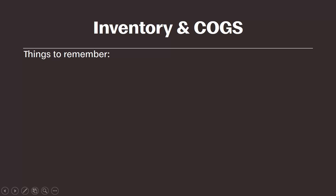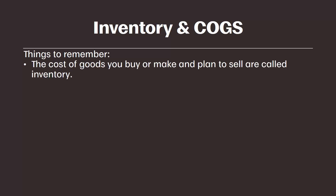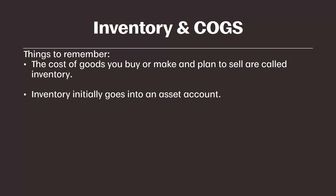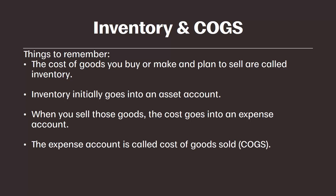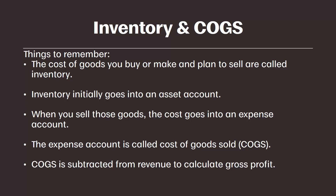Let me recap what I need you to know for now. First, the cost of goods you buy or make and plan to sell in the future are called inventory. Inventory initially goes into an asset account, and when you sell those goods the cost of the inventory moves from an asset account on the balance sheet to an expense account on the income statement. That expense account is called cost of goods sold, abbreviated COGS.